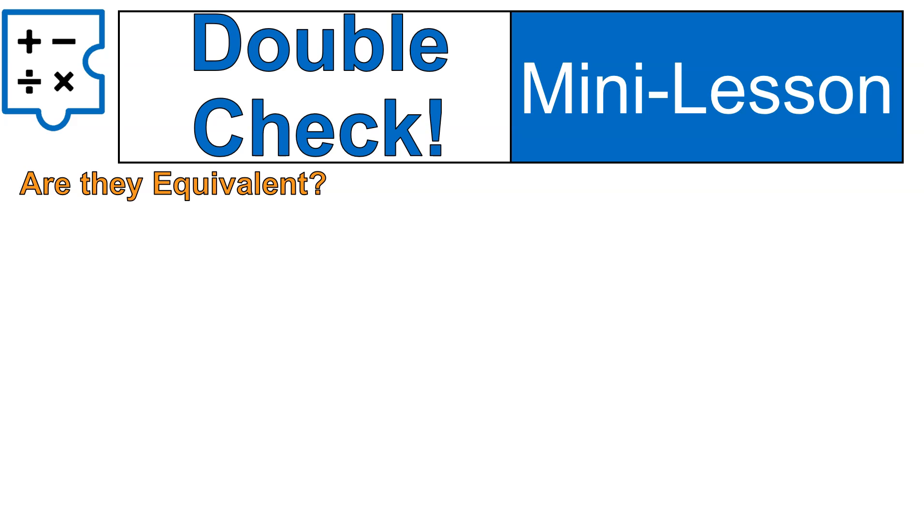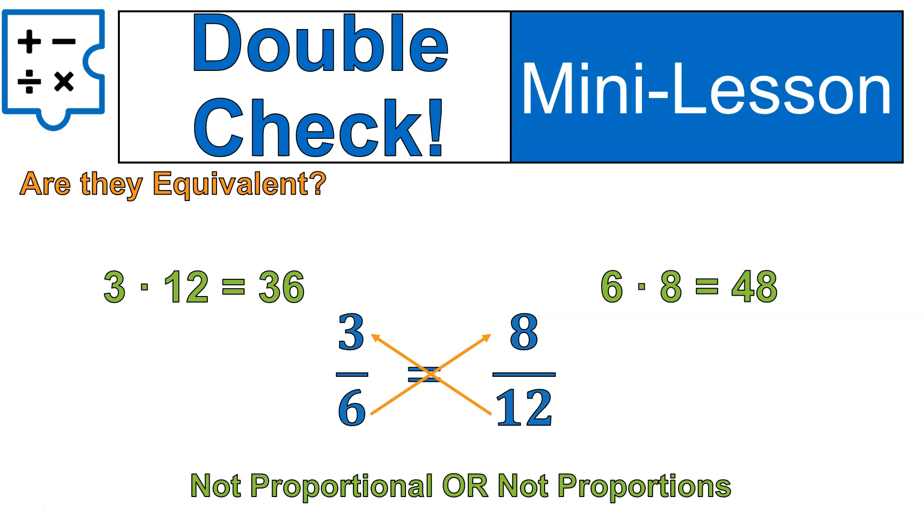Let's look at another example here where I have 3 sixths is equal to 8 over 12, or 8 twelfths. When I multiply 6 times 8 and 3 times 12, look what I get. 3 times 12 is 36. 6 times 8 is 48. These are not equal. 36 is not equal to 48. The products are not equal, so therefore they are not proportional, or this is not a proportion. That's two ways that we could say them. It's not a proportion or it's not proportional.